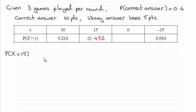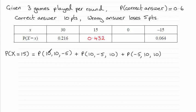Think about all the other combinations there are. You've got two correct answers and then a wrong answer. Or you could have a correct answer first, then a wrong answer, then a correct answer. Or you could have an incorrect answer first and then two correct answers.